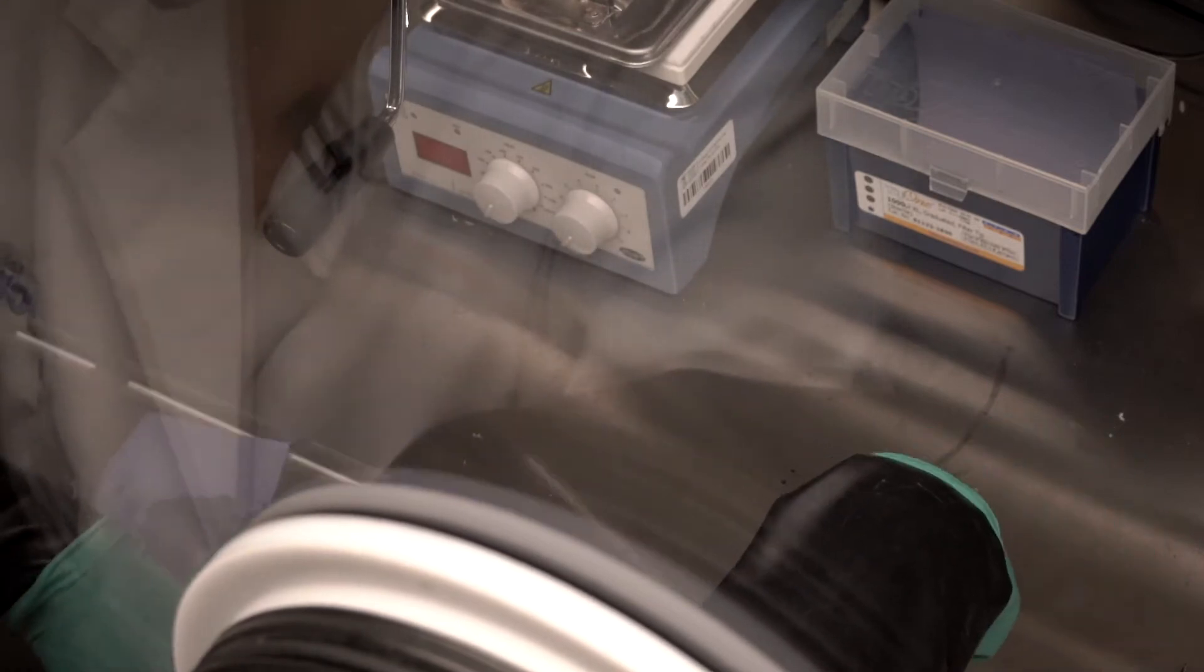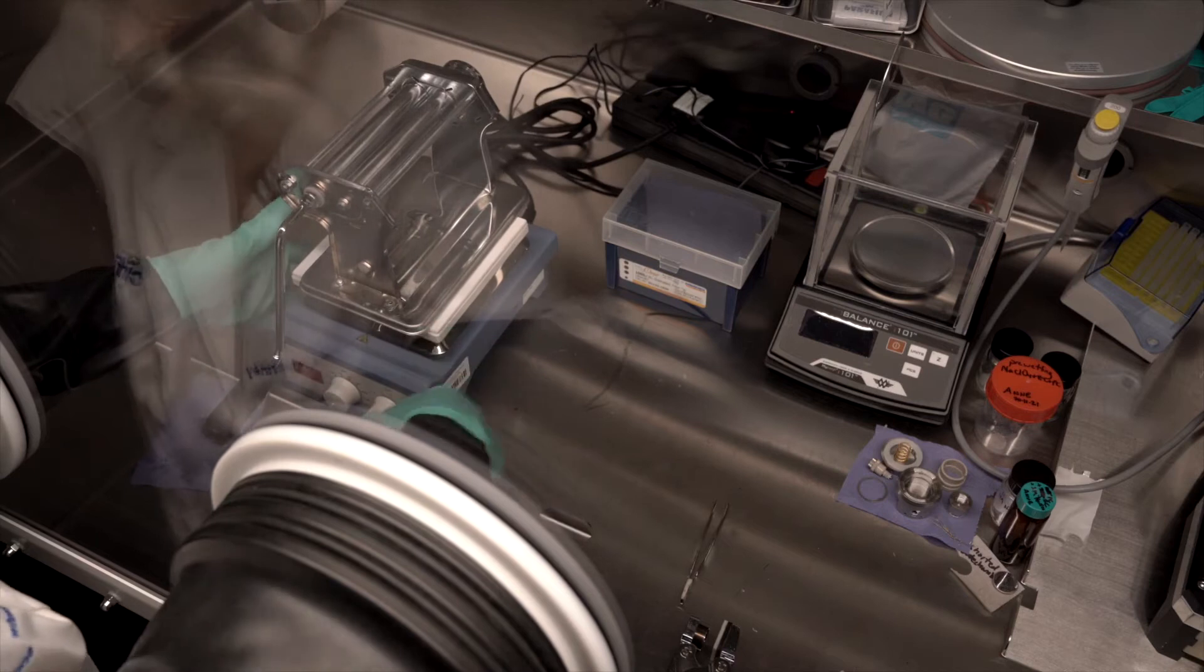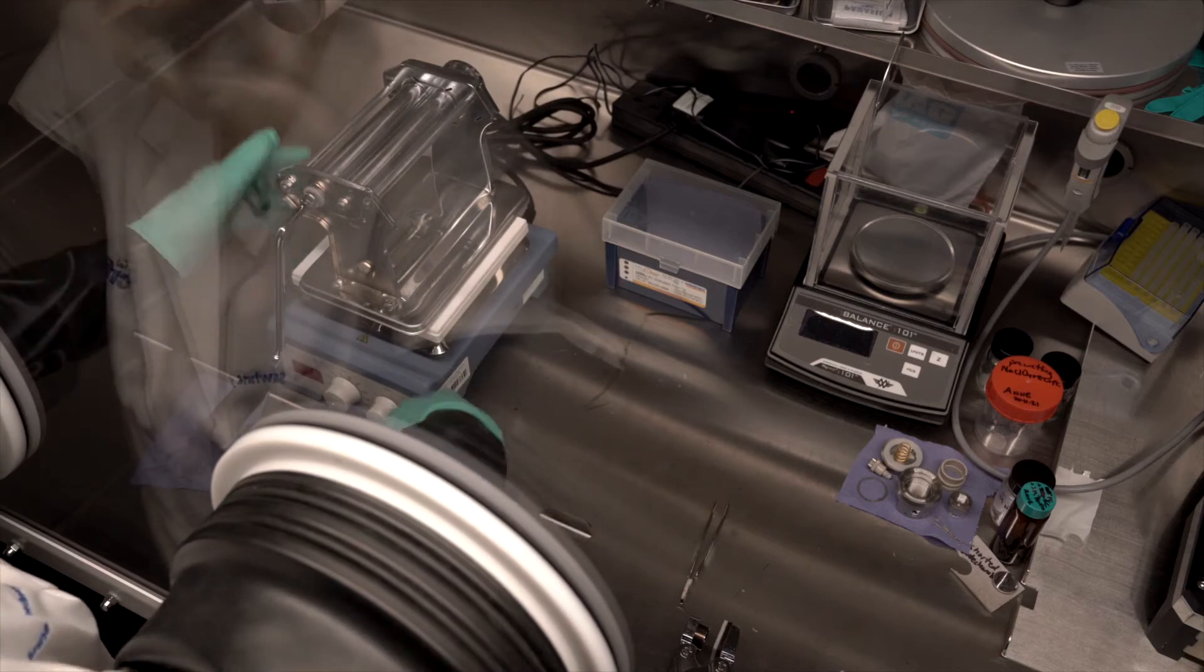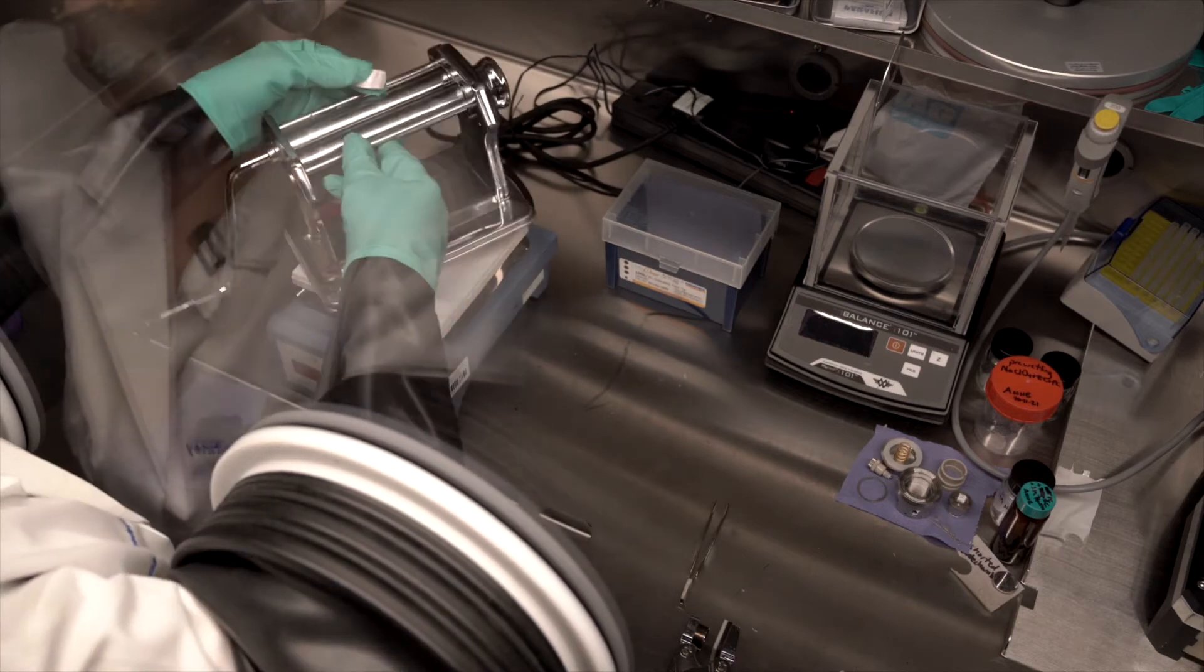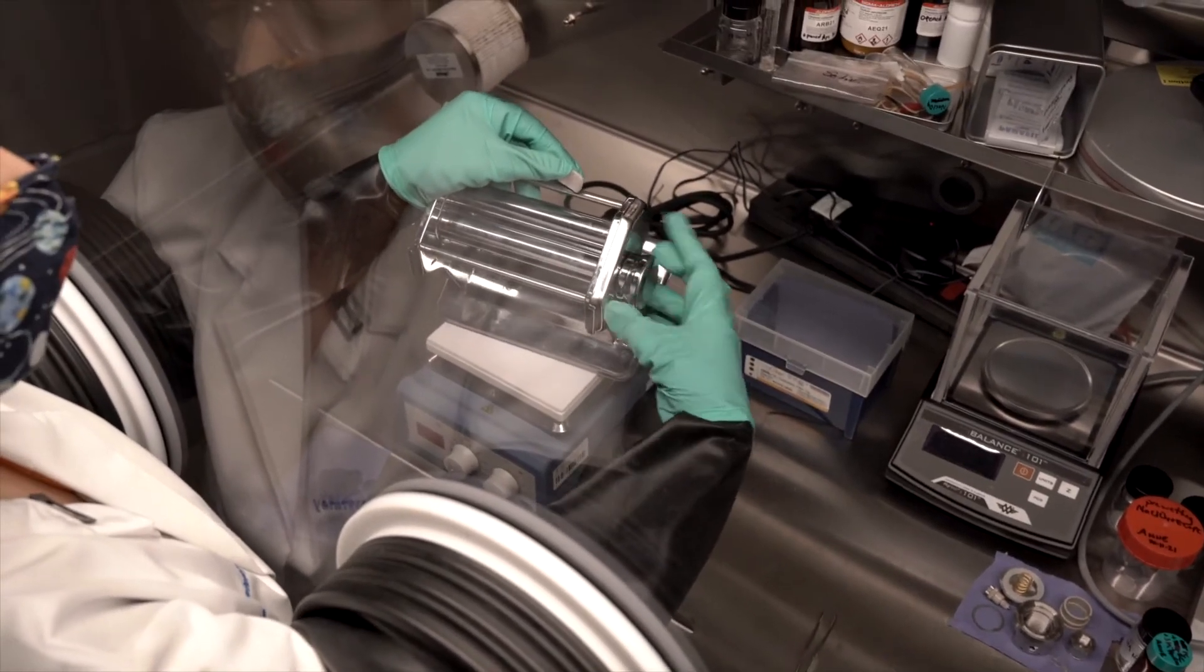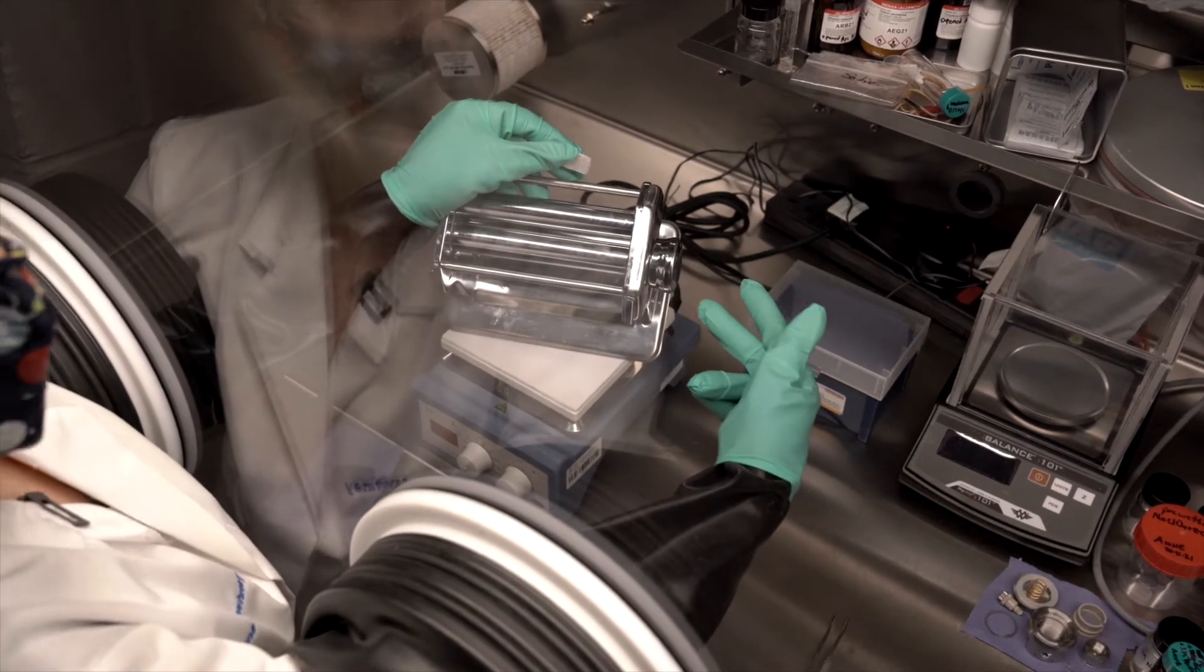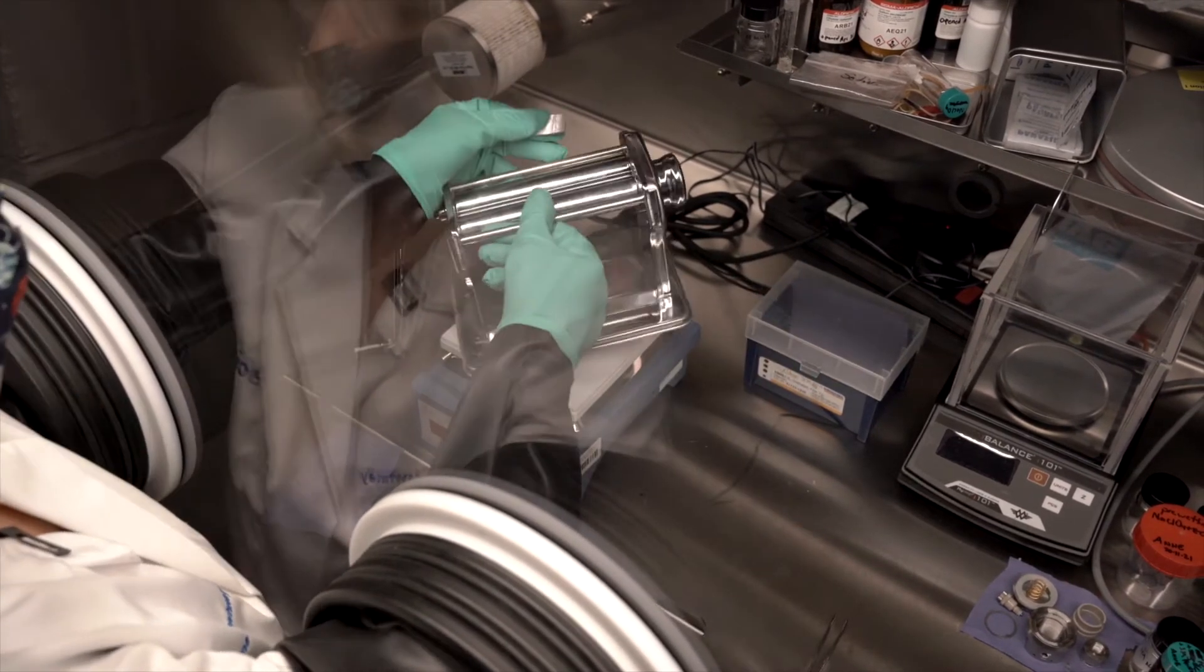So, now I'll move over to my pasta press. If you've used one of these to make pasta before, the principle is exactly the same. You want to start with your biggest gap size. And then progressively with each roll, go to a narrower gap size.